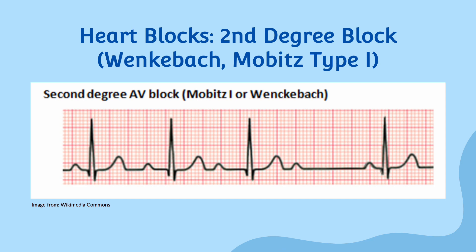Mobitz type 1, also known as Wenckebach, is characterized by a progressive lengthening of the PR interval until a ventricular beat is dropped. On an EKG, it appears as a regularly irregular rhythm with a gradually increasing PR interval. This type of heart block is typically benign and does not progress to third degree heart block. A helpful mnemonic: longer, longer, longer, drop — then you have a Wenckebach. It has helped me over the years, and I hope that expression helps you too.